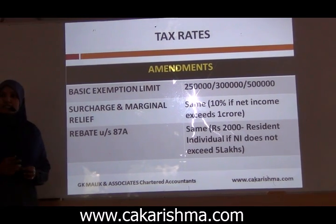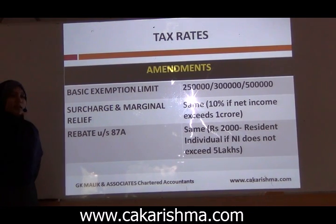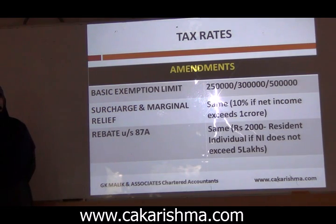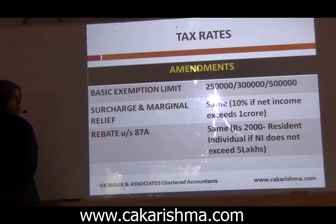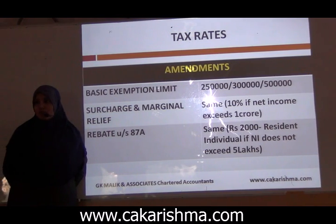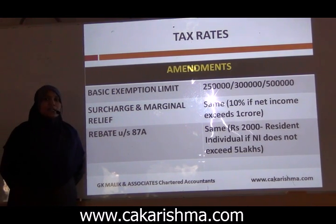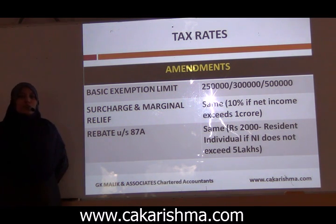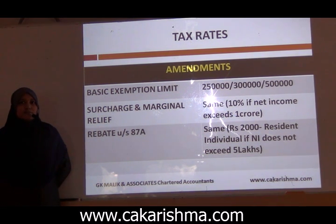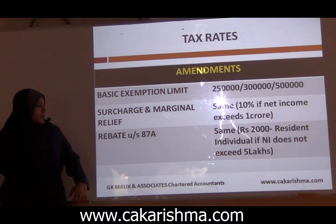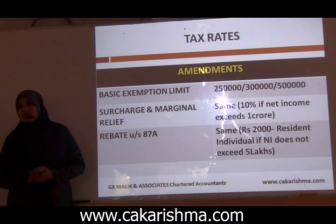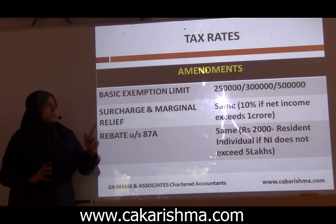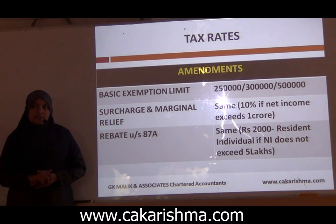When it comes to rebate under section 87A, the rebate is also the same. It is applicable for resident individuals. The income should not exceed 5 lakhs, and the amount of rebate is 2,000 or income tax liability, whichever is lower. Financial relief is also the same. Please remember our basic exemption limit is 2.5 lakhs.